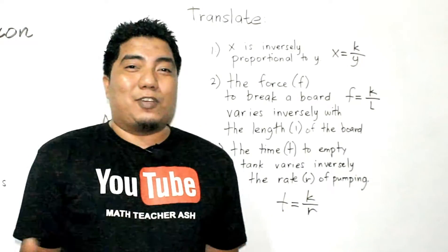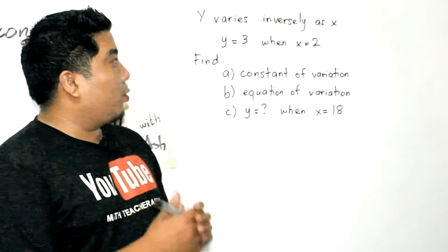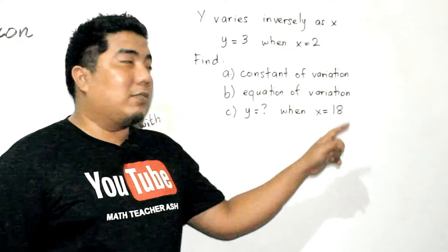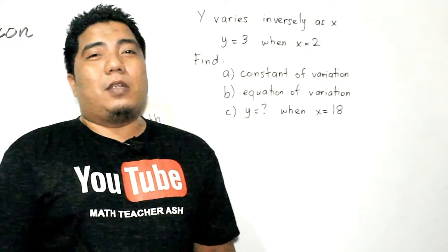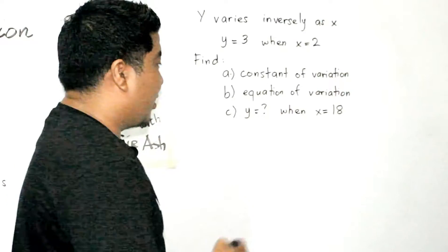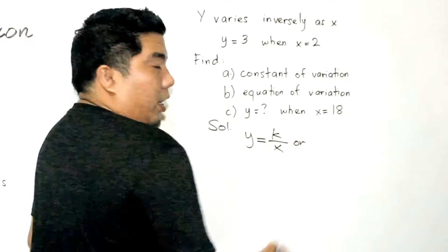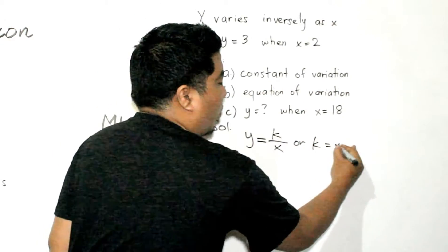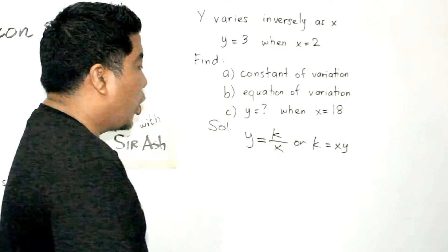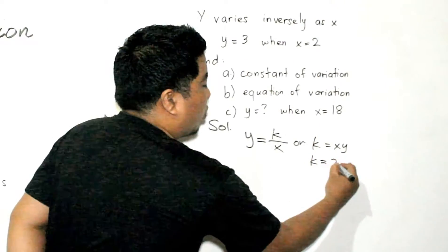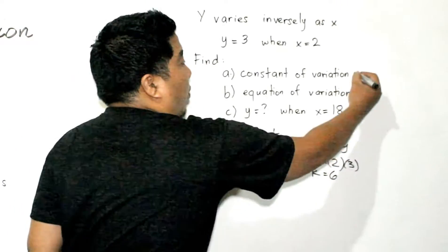Now let's solve an inverse variation problem. y varies inversely as x; y = 3 when x = 2. First, translate: y = k/x, so k = x × y. Substituting: k = 2 × 3 = 6. Therefore, the constant of variation is 6, and the equation of the variation is y = 6/x.